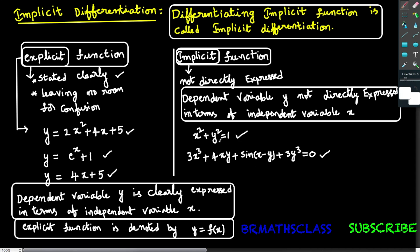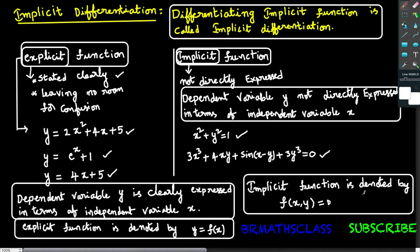Observe this first example — dependent variable y is not directly expressed in terms of x. However, you can write the first equation x squared plus y squared equals 1 in the form of y equals f of x. Observe the second example — y is not directly expressed in terms of x, and you cannot express this second equation in the form of y equals f of x. Implicit function is denoted by f of x comma y equals to 0. It is an equation in two variables x and y.